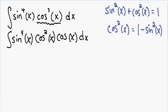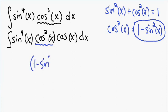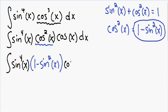Notice how we have a cosine squared of x in our integral, and we know that cosine squared of x is equal to 1 minus sine squared of x. So I'm going to replace the cosine squared of x with 1 minus sine squared of x. The rest of our integral stays the same — we have our sine to the 4th of x, our cosine of x on the right, and our dx.